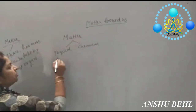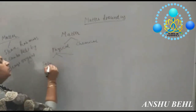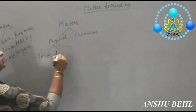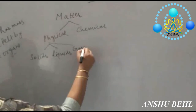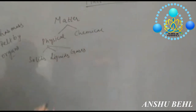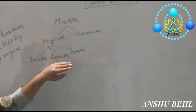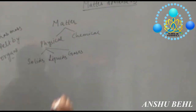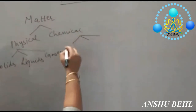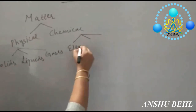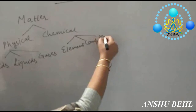In physical classification, we classify matter into solids, liquids, and gases — that is, solid state of matter, liquid state of matter, and gaseous state of matter. In chemical classification, it can be classified as element, compound, and mixture.